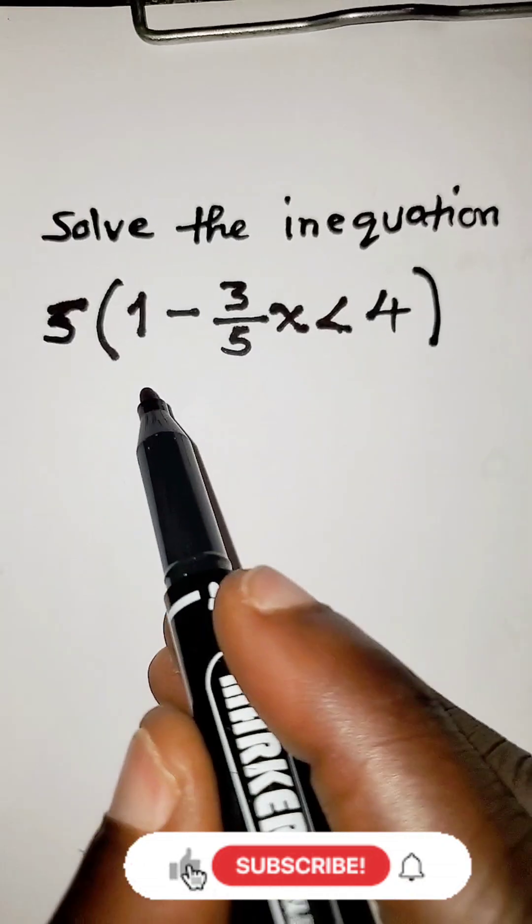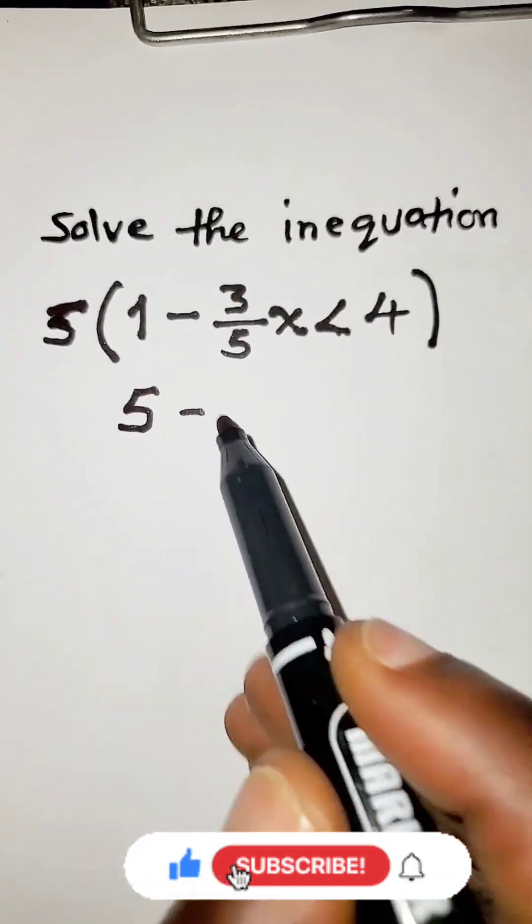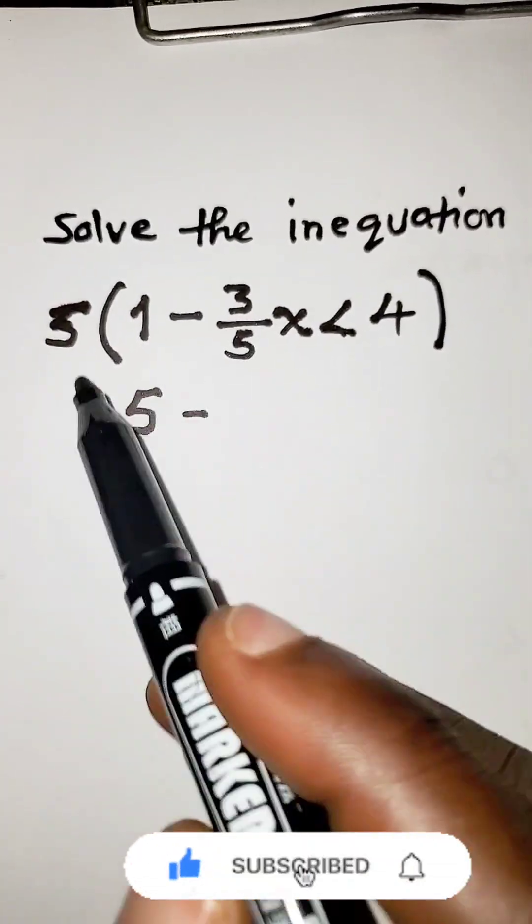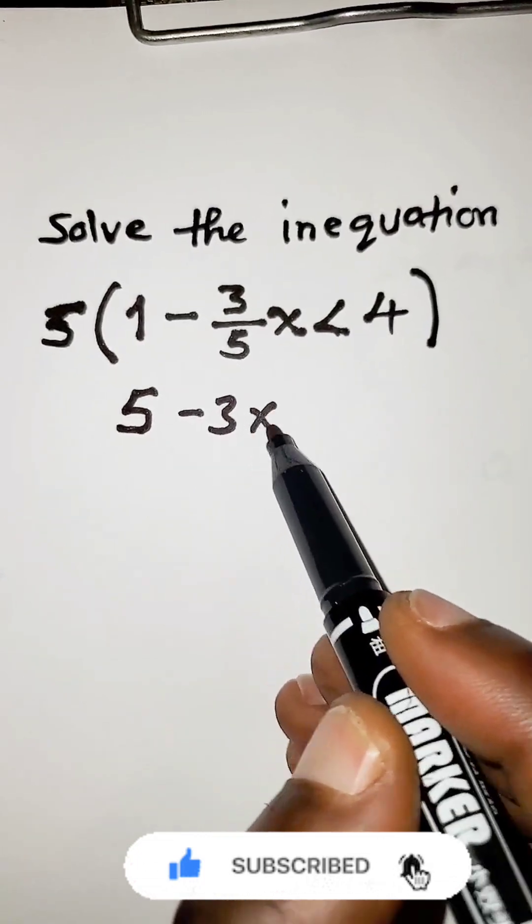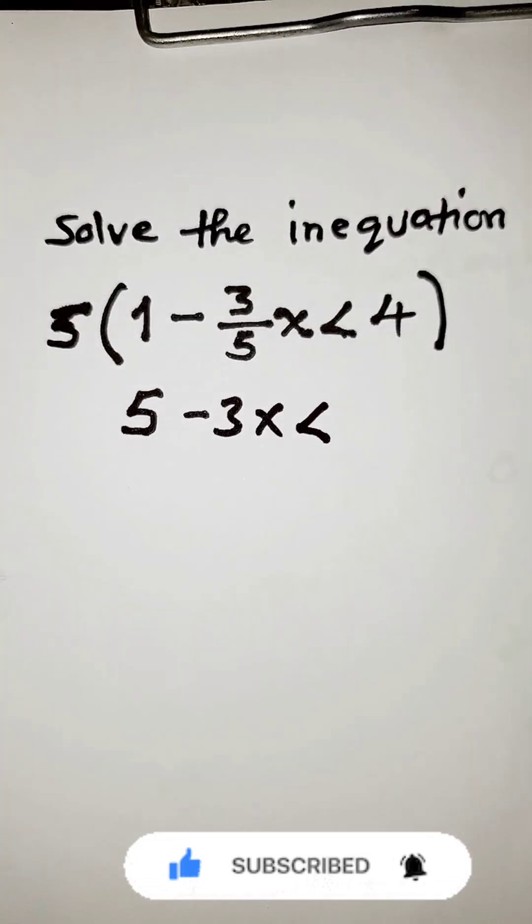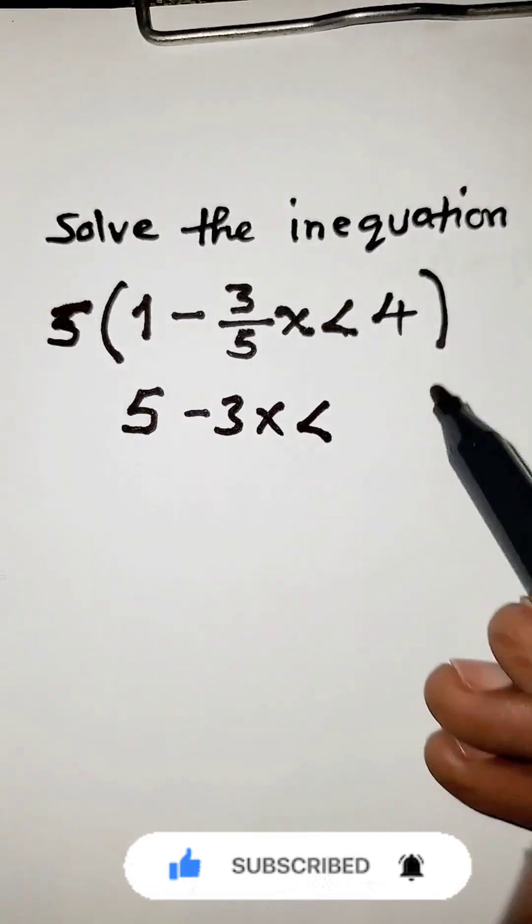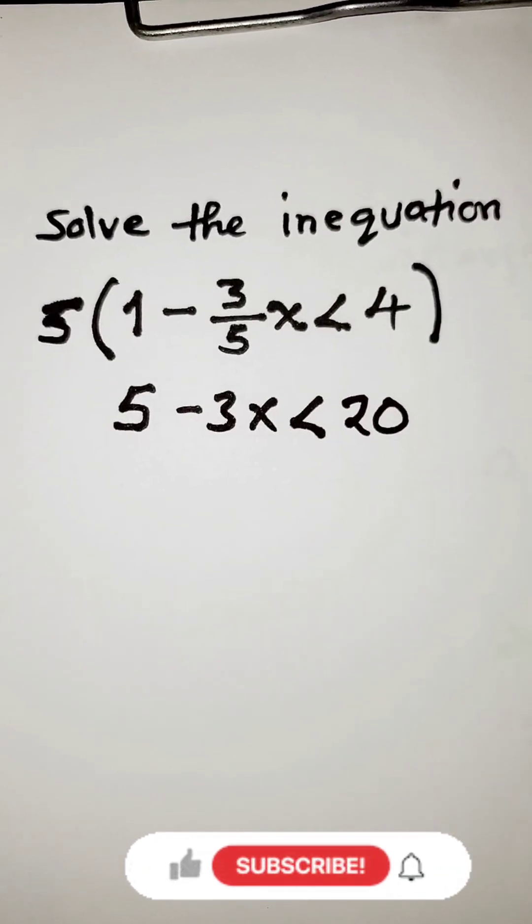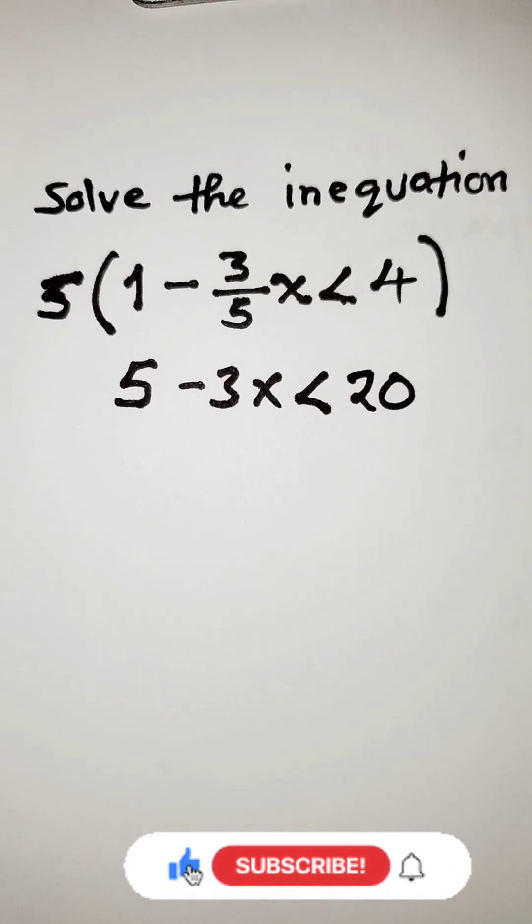So it would be 5 times 1, 5 minus 5 divided by 5, we will cancel, just remain with 3. 3x is less than 5 times 4 is 20. Now it is linear.